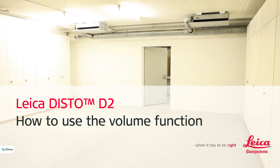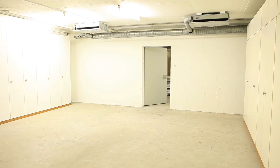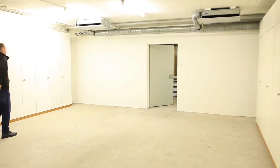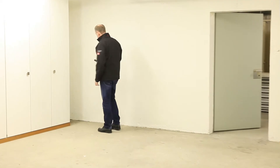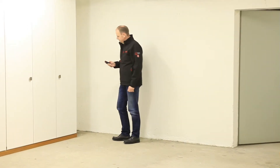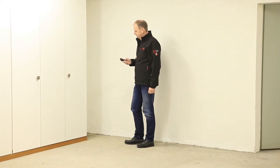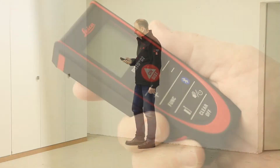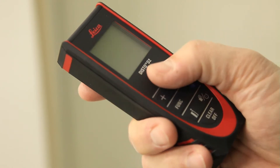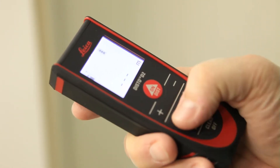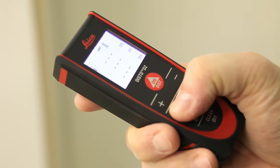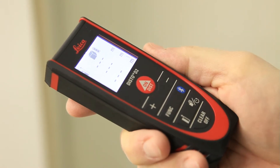Leica Disto D2 — how to use the volume function. We have here a very simple rectangular room and want to measure the volume with the help of the new Disto D2. First, switch on the Disto with the OnDist button. Press FUNC twice to get into the volume function.